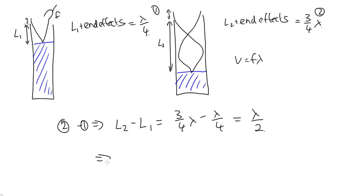So this tells us that lambda is equal to 2 times L2 minus L1. And so to get the velocity, v is equal to 2f times L2 minus L1. And we've accounted for end effects there. And so this would be a way to calculate the velocity of sound.